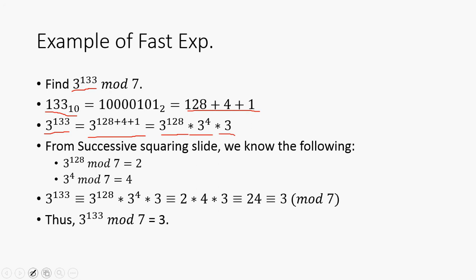So from the successive squaring slide from a few slides ago, we can recall that 3 to the 128 is equivalent to 2 mod 7. And then 3 to the 4th is equivalent to 4 mod 7. So we can simply do some substitution. We can plug in 2 over here, and we can plug in 4 over here, and we can leave 3 how it is because it's a small number. And then we can simply evaluate 2 times 4 times 3, which is 24, which is equivalent to 3 mod 7. Thus, 3 to the 133 mod 7 is going to be 3.